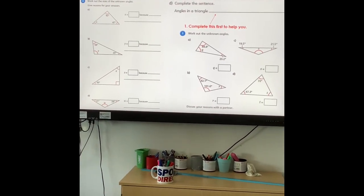C, 19.5 added to 21.6, 41.1, take that away from 180, 139 degrees. And lastly, 47.3, add 72, take that away from 180 and you end up with 60.7. Very well done if you got those right. It was quite a few steps there, especially with the odd decimal thrown in, so very well done.